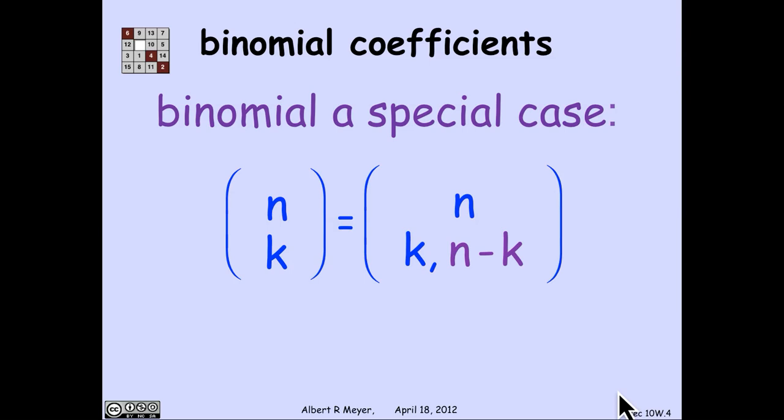Binomial coefficients, by the way, are a special case. When we write n choose k, if we wrote it as a multinomial coefficient, you'd have to write it as n choose k and then choose n minus k.